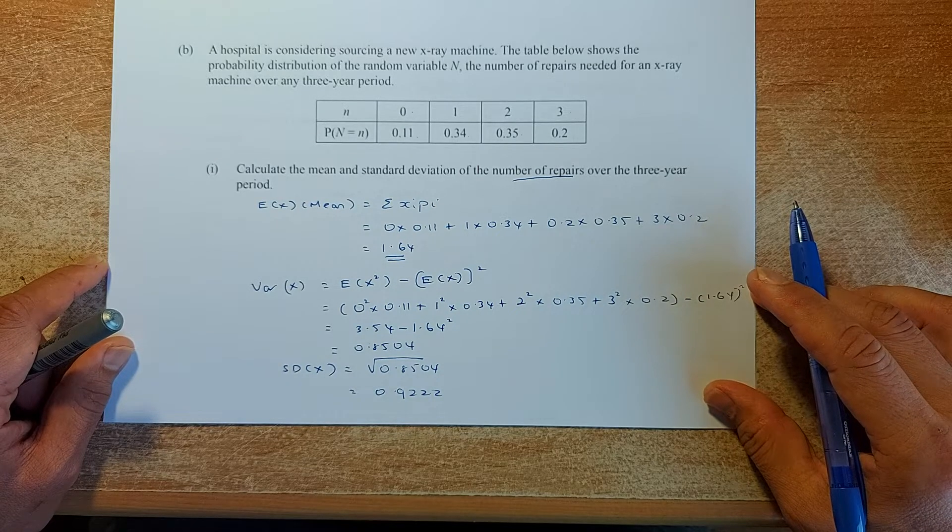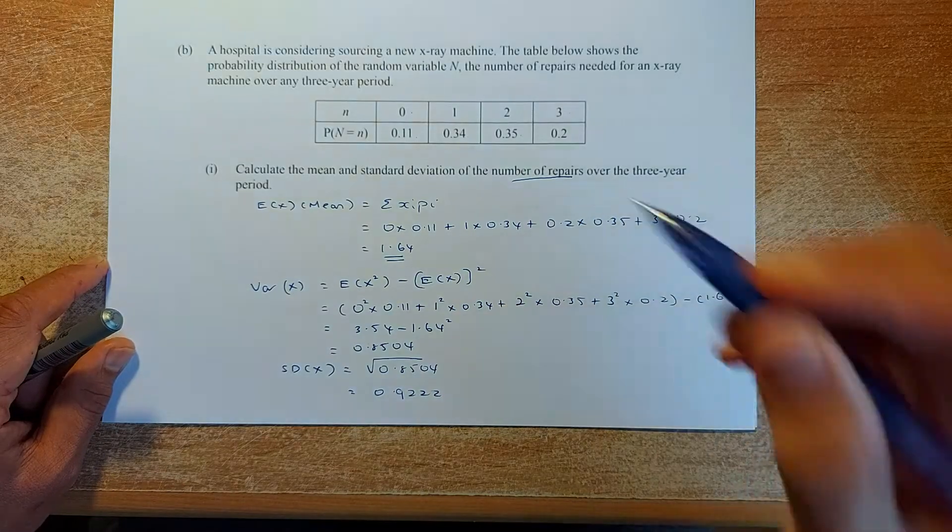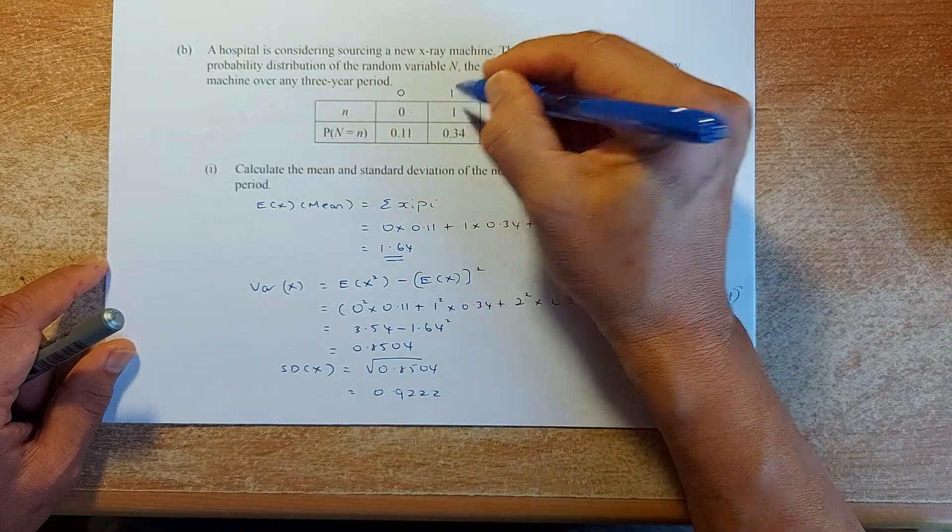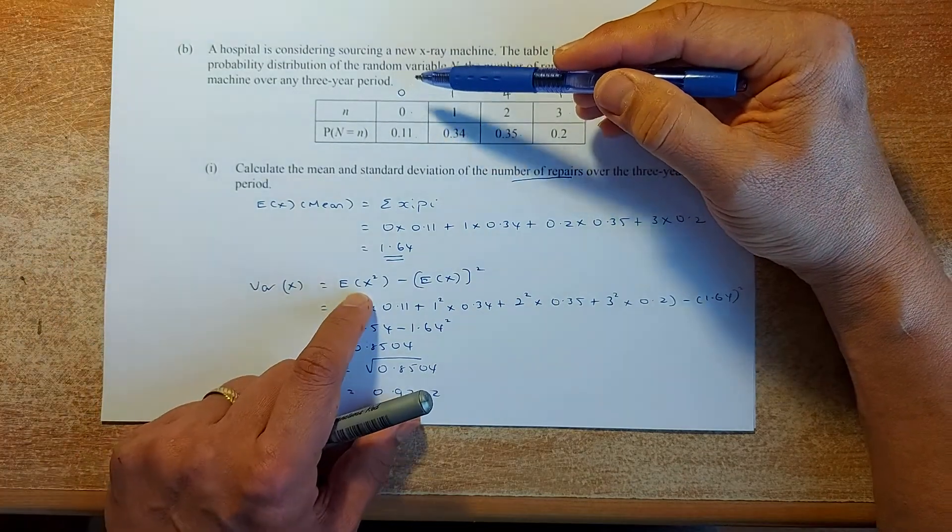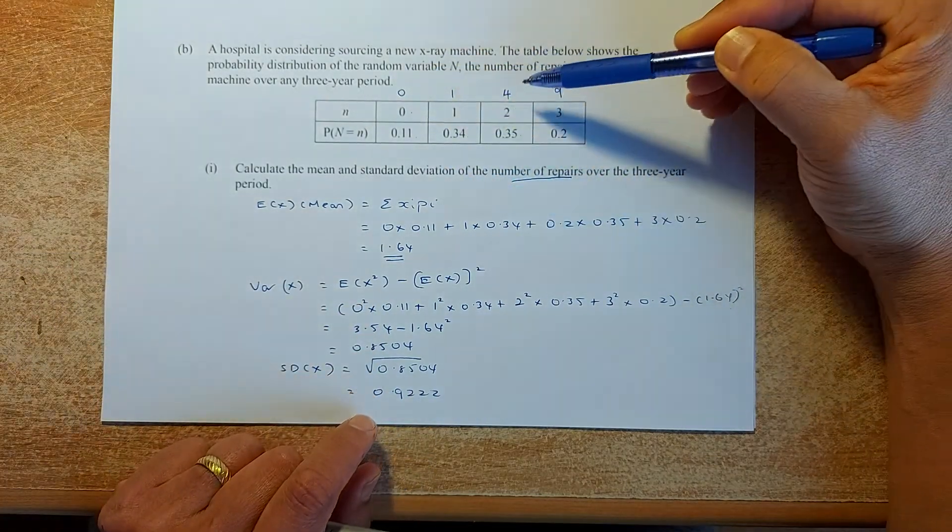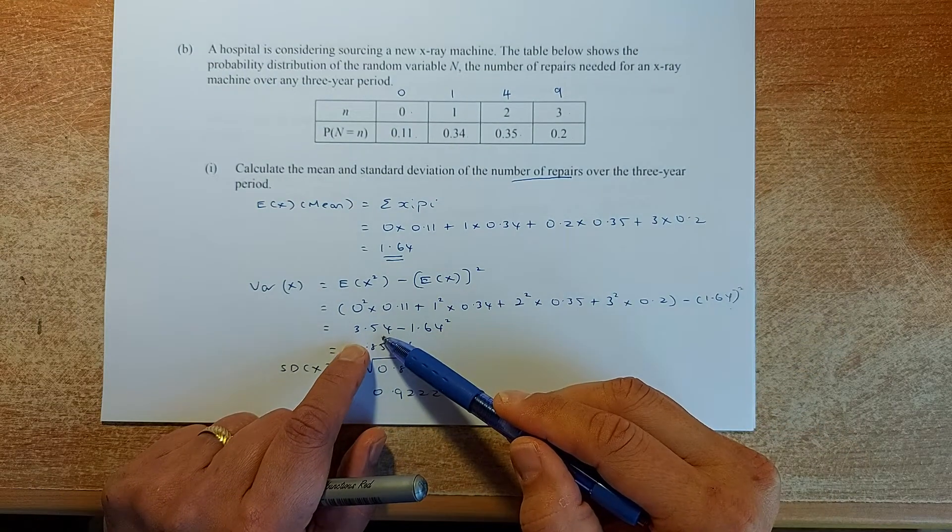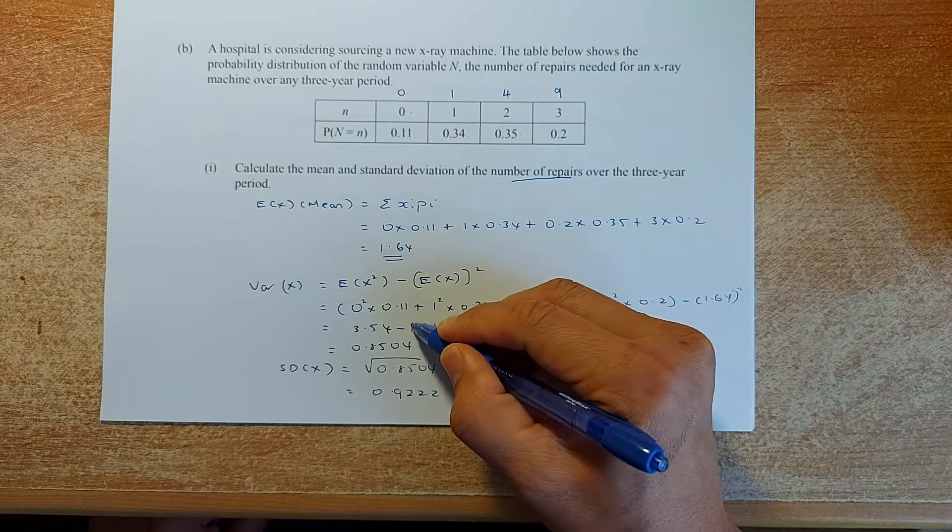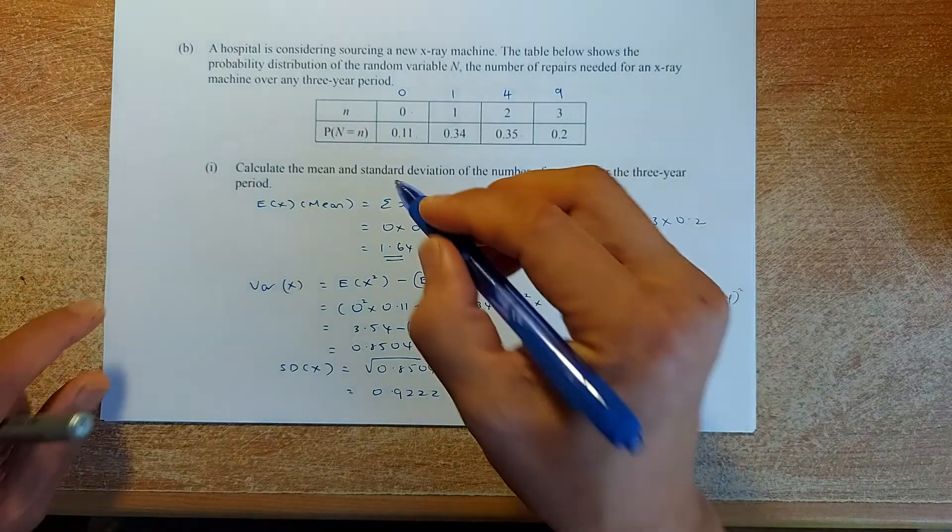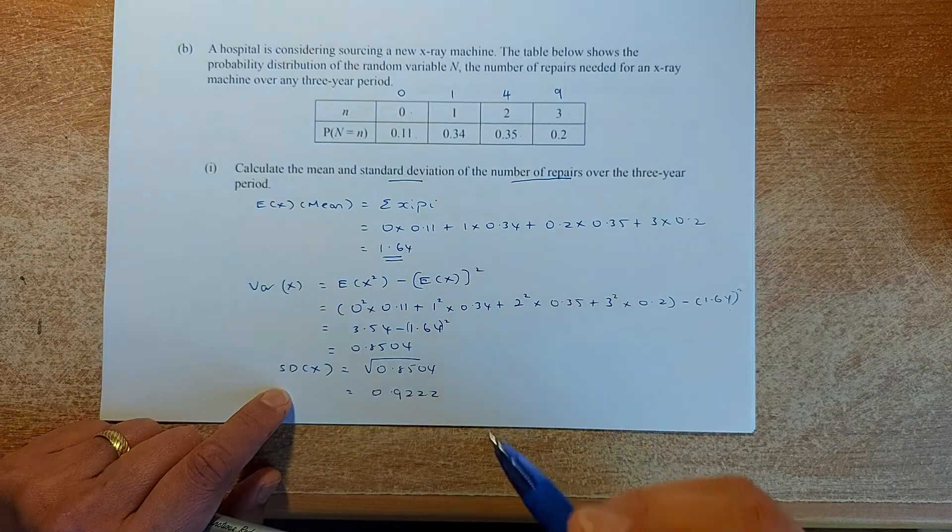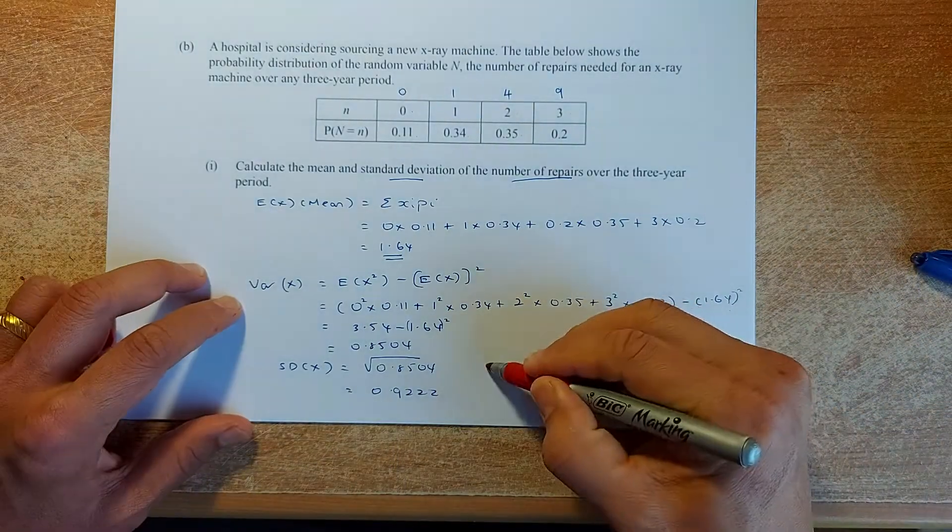To calculate the variance, we use this formula: sum of E(X²) minus the mean (1.64) squared. To get X squared, you square the values: 0 squared is 0, 1 squared is 1, 2 squared is 4, and 3 squared is 9. Calculate sum of X squared: 0 times 0.11 plus 1 times 0.34 plus 4 times 0.35 plus 9 times 0.2. You get 3.54 minus 1.64 squared, which equals 0.8504. To calculate the standard deviation, take the square root: √0.8504 = 0.9222. That will give you an achieve.